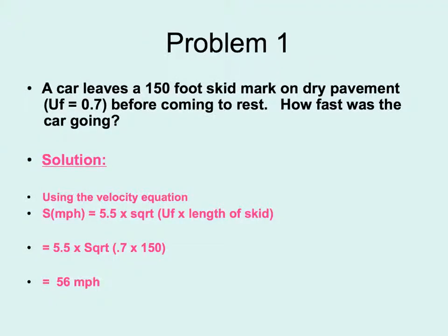Our first example problem has a car leaving a 150-foot skid mark on dry pavement. Remember that because there are different surfaces, we will have different correction factors, and these are standard. This is given for you, dry pavement, with a UF of 0.7. So the car skids 150 feet before coming to rest. How fast was the car going?